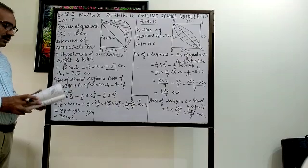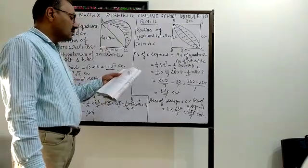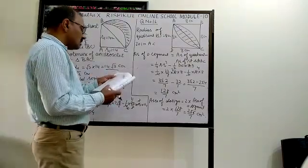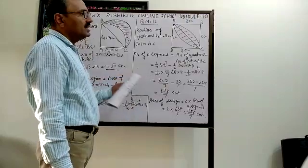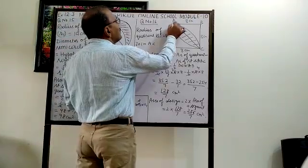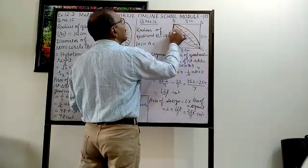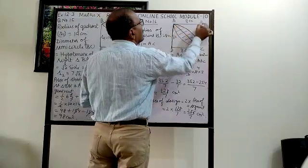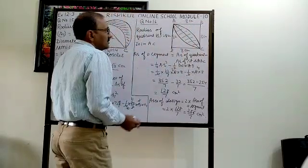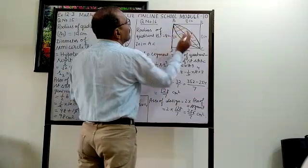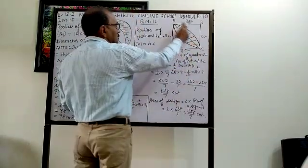Question number 16 is: calculate the area of the design region in the figure common between the two quadrants of circles of radius 8 cm each. Quadrant ADC and quadrant ABC are the two quadrants, and you have to find the common area — the overlapping region between these two quadrants.